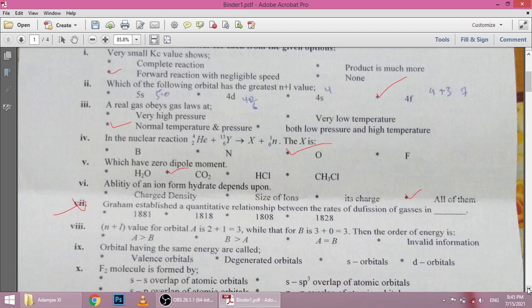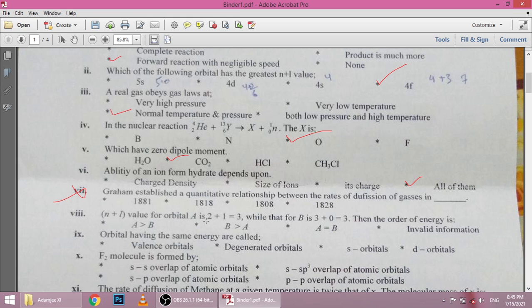Next is N plus L value for orbital A is 2 plus 1 while B is 3 plus 0. The order of energies, so B can be more energy because of higher N value. Ninth, orbitals having the same energy are called degenerate orbitals.